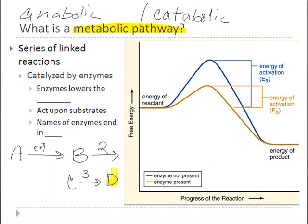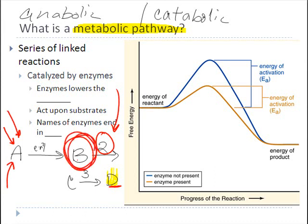You can actually predict what will happen in a metabolic pathway. Let's say somebody has a genetic defect and they cannot make enzyme number two. Obviously we're never going to be able to create D because we lack enzyme number two. But what's interesting is that if we keep adding more and more A to this reaction, we'll start to get a buildup of B, because we can't get past B without enzyme number two to convert it to C and then to D.